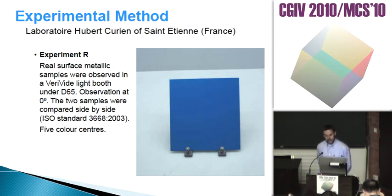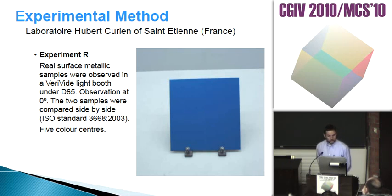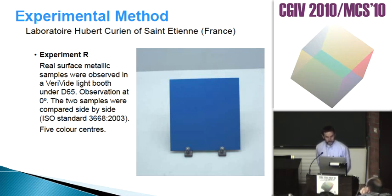The experimental data were obtained in two different experiments carried out in the Hubert-Curien laboratory of Saint-Étienne in France: Experiment R and Experiment B. In Experiment R, real surface metallic samples were observed in a wide light booth under D65, with 0-degree observation angle so that observers were perpendicular to the samples to avoid gloss. The two samples were compared side by side following ISO standard 3668-2003. With this methodology, five different color centers were studied.